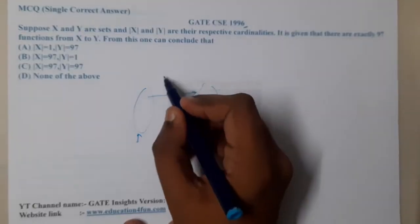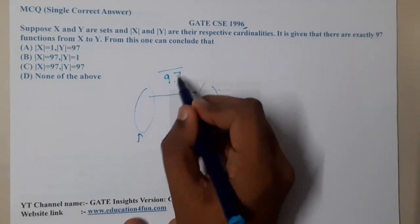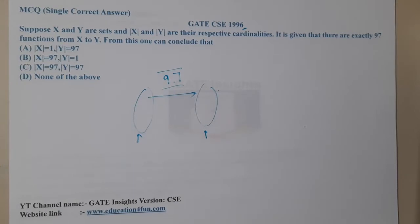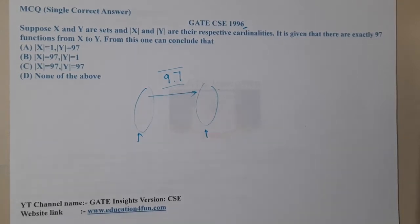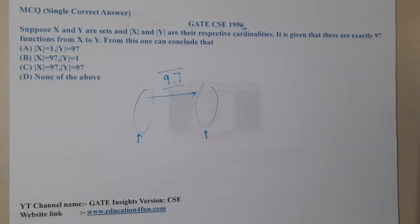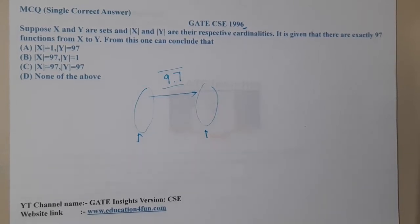From this, what can we conclude? Option A says X equals 1, Y equals 97. B says X equals 97, Y equals 1. C says both of them are 97, and D says none of them is 97. The first thing you should remember here is the concept we've already discussed.